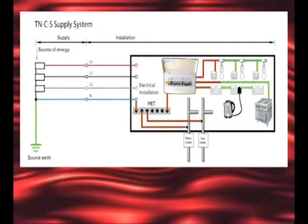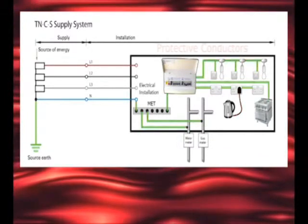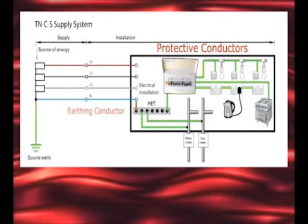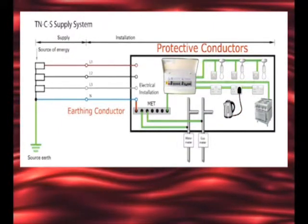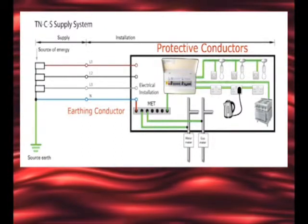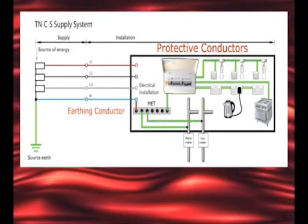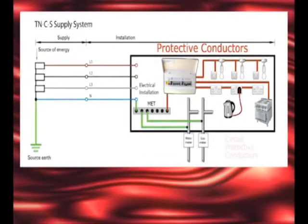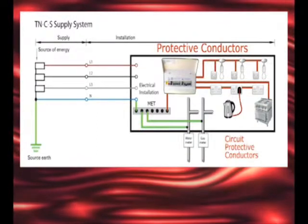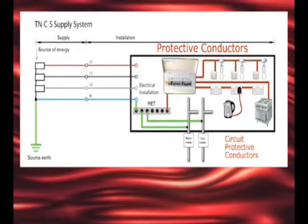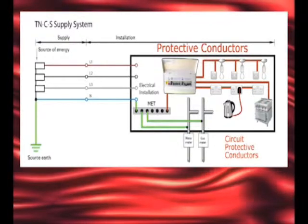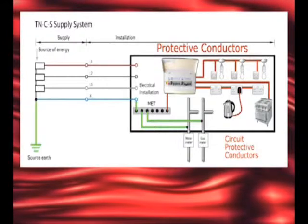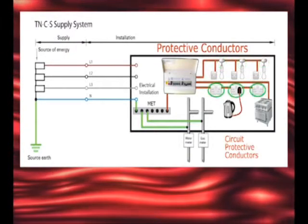The conductors within the installation providing this connection to Earth are known collectively as protective conductors. There's an earthing conductor which connects between the incoming supply Earth — which could be an Earth electrode on a TT system — and the main earthing terminal or MET. All exposed conductive parts in the installation are connected to the MET using circuit protective conductors, CPCs. It's a requirement for CPCs to be run to and terminated at each point and accessory such as switches, ceiling roses and socket outlets.